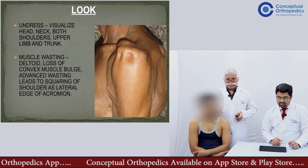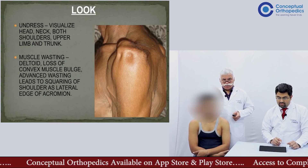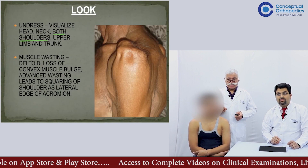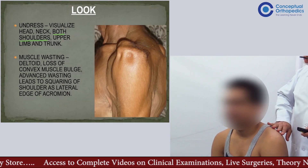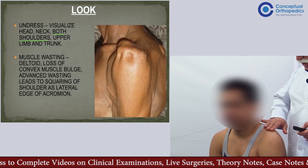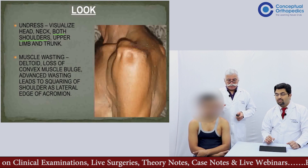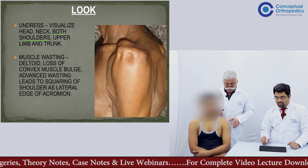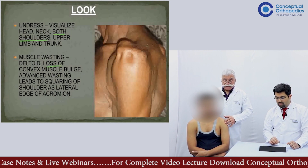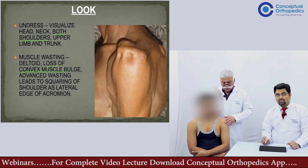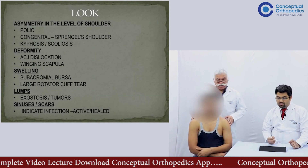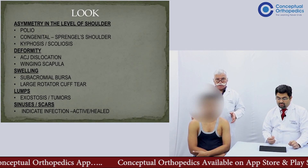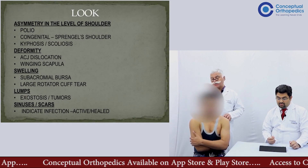Coming to the look part: undress the patient and visualize both shoulders. The head, neck, and upper part of the trunk should be visible. One must look for any muscle wasting, which can involve the deltoid, supraspinous, infraspinous, or even the folds. If there is muscle wasting of the deltoid due to paralysis from the axillary nerve, one can get flattening of the contours of the shoulder. In extreme cases, the acromion becomes visible as bony prominences start appearing. One also looks for asymmetry in the level of the shoulders, which can occur in polio, a sprung shoulder, or kyphosis and scoliosis.